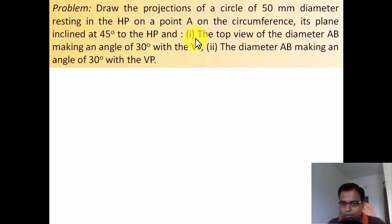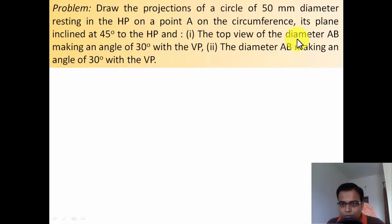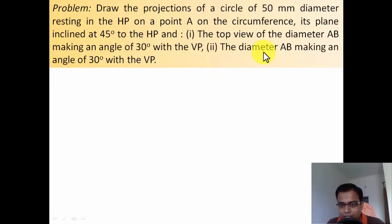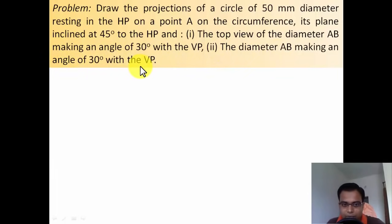Now there are two cases, so there are going to be two different drawings. In case one, the top view of the diameter AB making an angle of 30 degrees with the VP, and in case two, the diameter AB itself — that is the true length of the diameter — making an angle of 30 degrees with the VP.